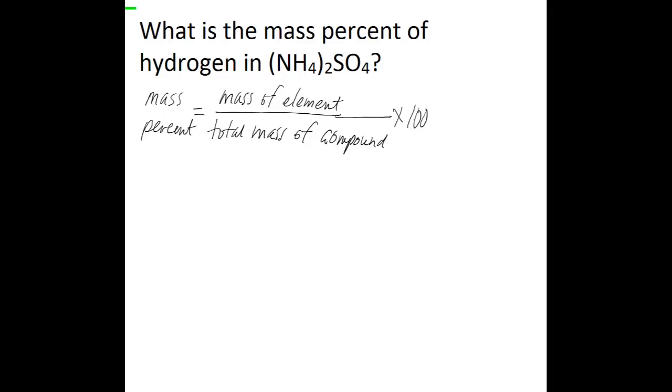So the problem says, what is the mass percent of hydrogen in ammonium sulfate? So you can use the periodic table to find the atomic masses for all of the elements in ammonium sulfate,